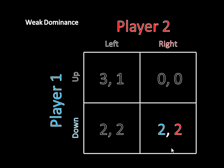To see that, I'll show you that down-right is in fact a Nash equilibrium. All you have to do is check whether players can profitably deviate. Player two can't switch to left and get a better payoff — she's perfectly happy playing right when player one plays down because two equals two. And player one doesn't want to switch from down to up because he's currently getting two; switching gives him zero. So down-right is a Nash equilibrium.